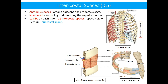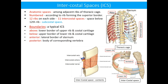Intercostal spaces are anatomical spaces present among adjacent ribs of the thoracic cage. They are numbered according to the ribs forming the superior border. As there are 12 ribs on each side, there are 11 intercostal spaces on each side. The space below the 12th rib on each side is named as subcostal space.